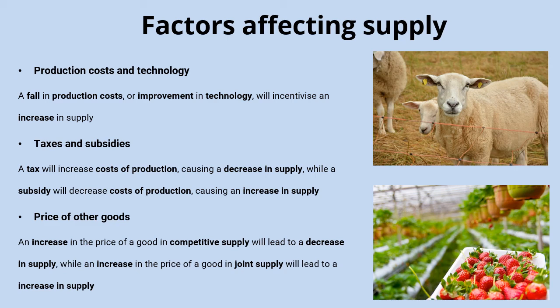Alternatively, you could have goods in joint supply. For example, lamb and wool are produced together with the same resources. If the price of lamb increases, that incentivizes farmers to produce more lamb, and as an offshoot of producing more lamb they'll also have more wool to supply — so that increases the supply of wool.